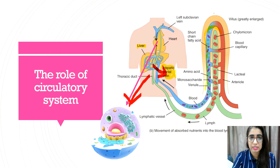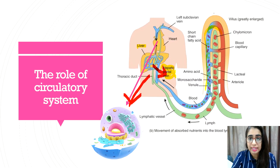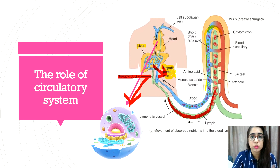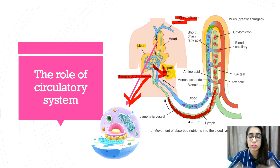As for the role of the lymphatic system and the lacteal, lipids together with fat-soluble vitamins — the ADEK vitamins — are absorbed into the villi via the lacteal and channeled into larger lymphatic vessels. The nutrients are transported from the lymphatic vessel to the thoracic duct, and then channeled into the left subclavian vein and into the blood circulatory system through the heart, which pumps the blood to the body cells.